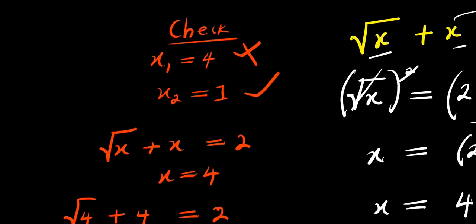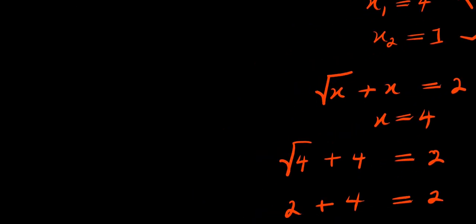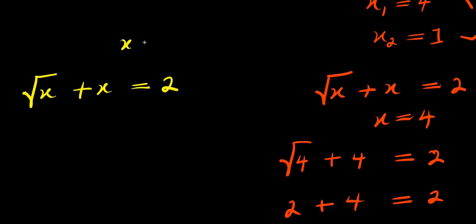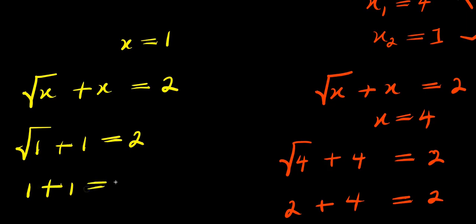Let's consider when x equals 1. We have square root of 1 plus 1 equals 2. Square root of 1 is 1, plus 1 equals 2 — and 1 plus 1 is indeed 2. So the only valid value of x that satisfies this equation is x equals 1.